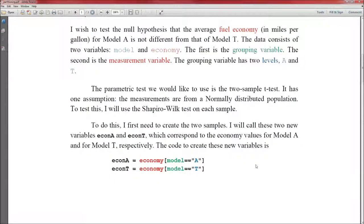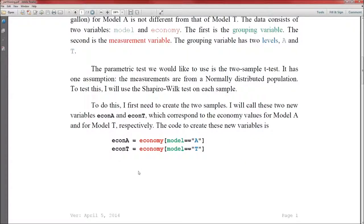The parametric test we would like to use is the two-sample t-test, but let's go down to the bottom to how we actually create these two new variables. First thing is we're going to have to name this variable. I call it econA because it's the economy for model A. EconA has meaning to me as a variable. You could call it Bob if you want. Bob doesn't have much meaning.